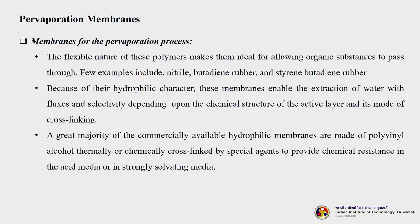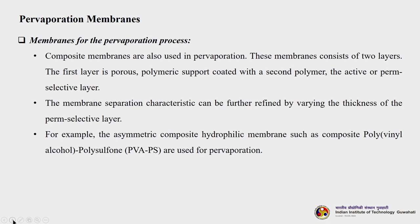A great majority of commercially available hydrophilic membranes are made of polyvinyl alcohol, thermally or chemically cross-linked by special agents to provide chemical resistance in acid or strongly solvating media. Composite membranes are nowadays gaining a lot of attention. These membranes consist of two layers: the first is a porous polymeric support coated with a second polymer, the active or perm-selective layer. The membrane separation characteristic can be further refined by varying the thickness of the perm-selective layer. For example, asymmetric composite hydrophilic membranes such as composite polyvinyl alcohol-polysulfone are used for pervaporation.